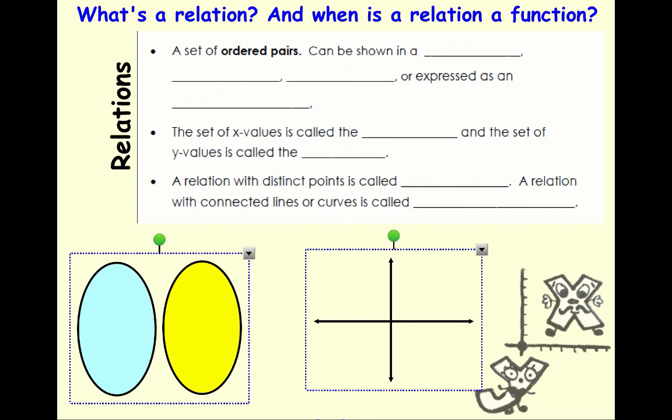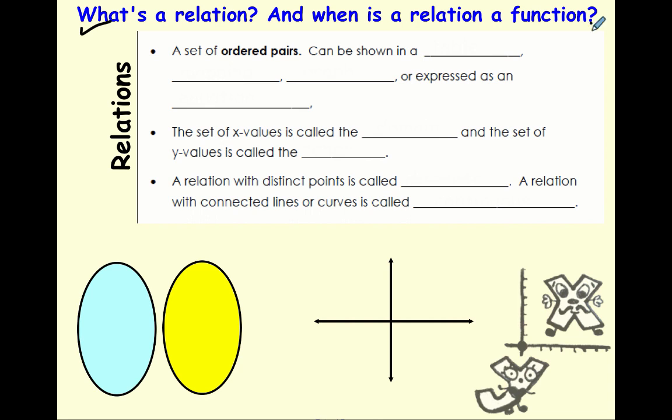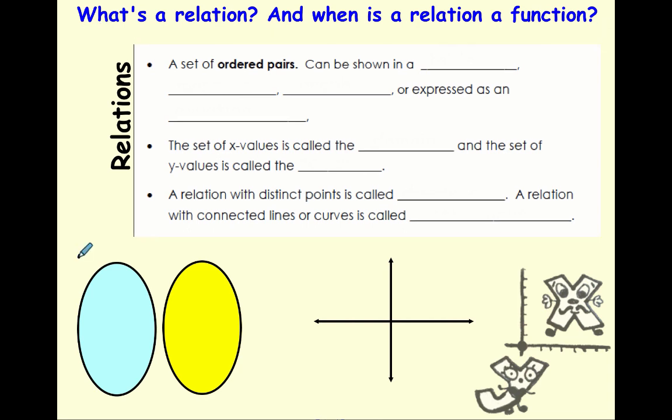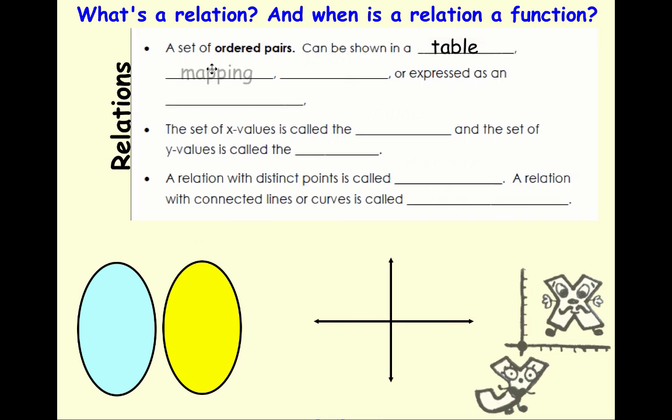So first we're going to make sure we understand what's a relation and when is a relation a function. A set of ordered pairs is one way to look at a set of relations, but they also could be seen as a table, a mapping, a graph, or an equation. Just because we see sets of ordered pairs doesn't necessarily mean it's a function, but those are different ways that we can look at them.